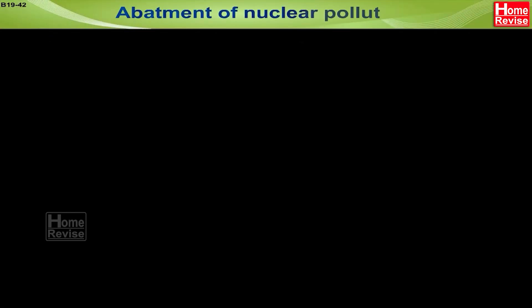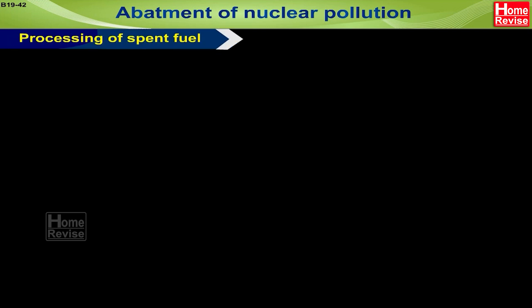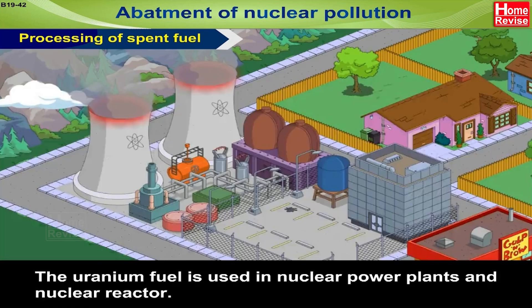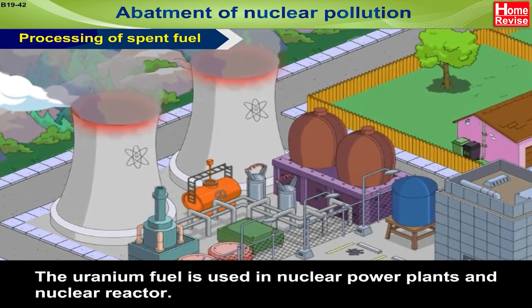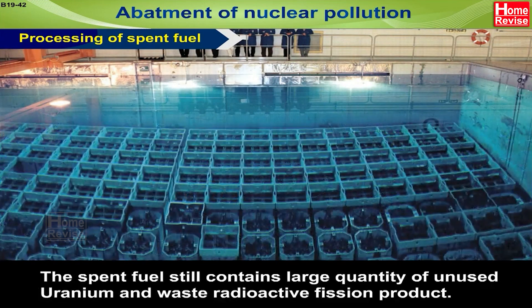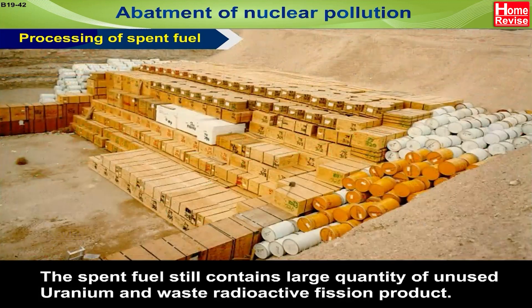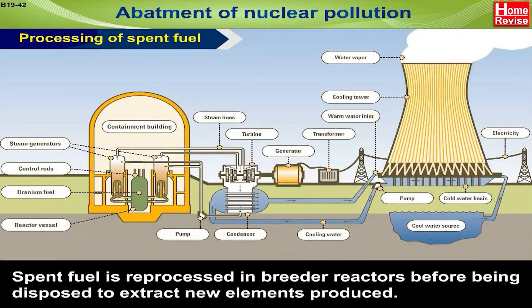Abatement of nuclear pollution — processing of spent fuel. The uranium fuel used in nuclear power plants and nuclear reactors leaves spent fuel that still contains large quantities of unused uranium and waste radioactive fission products. Spent fuel is reprocessed in breeder reactors before being disposed of, to extract new elements produced.